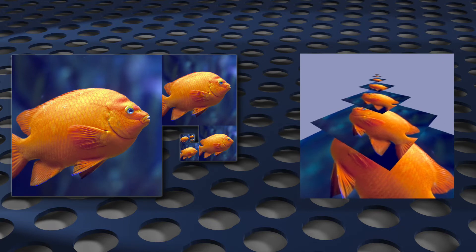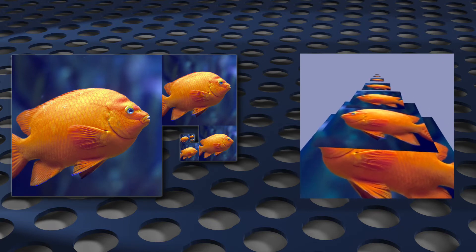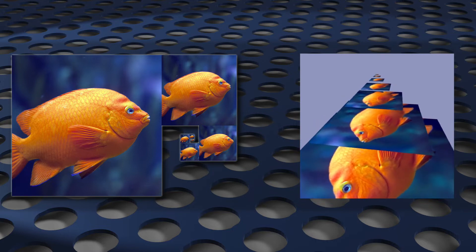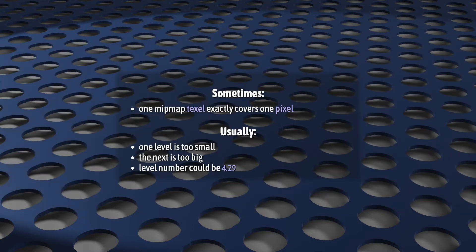Now that we have them, WebGL's job is to figure out which level has the texels big enough to cover each canvas pixel. Occasionally, one level will exactly cover a pixel, but usually, one level will be just a little bit too small, and the next one up will be a little bit too big. So you end up with a level number more like 4.29, where mipmap level 4 is just a little too small, and mipmap level 5 is just a little too big. But as you'll see in a minute, it doesn't really matter if you don't have a nice round integer for your level value.